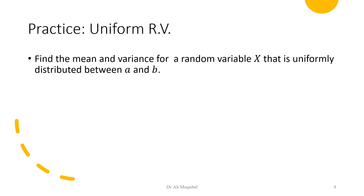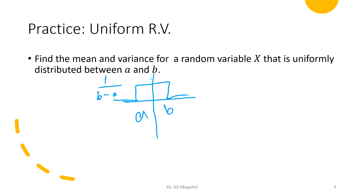I'll leave you with this exercise: find the mean and variance for a random variable x that is uniformly distributed between a and b. The uniform distribution has PDF equal to 1/(b−a) between a and b, and zero outside. We know the mean is (a+b)/2, but what is the variance? Apply the definition, share your answer in the comments, and then verify against the known result.